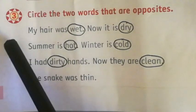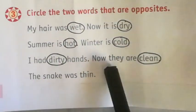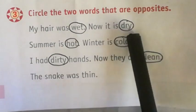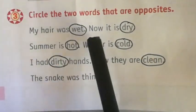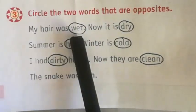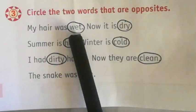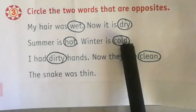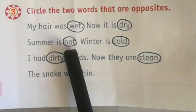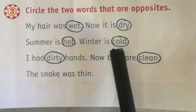Now let's move to question number three: circle the two words that are opposites. Words and their opposites are given — identify them and circle. My hair was wet, now it is dry — wet and dry are opposites, so circle wet and dry. Summer is hot, winter is cold — hot and cold are opposites, so circle hot and cold.